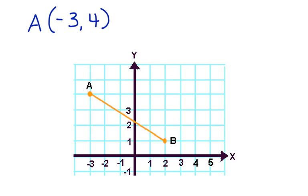The coordinates of B are positive 2, positive 1. That's B. Now we have two ordered pairs and we can substitute these values into the distance formula and solve for the length of the segment.